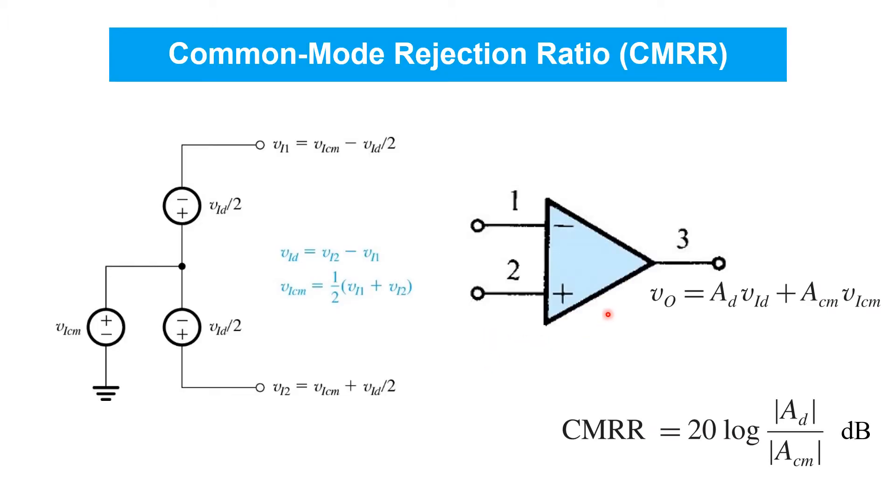Of course, op amps themselves are difference amplifiers, but in this section, we're interested in circuits that use op amps together with resistors to form difference amplifiers with tightly controlled gains.